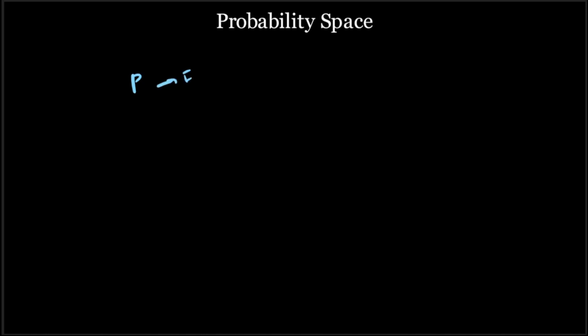The third characteristic is the probability measure. Basically, a probability measure is a measure using which you can define the probability of occurrence of all the events in the sigma algebra. For example, in the coin toss experiment, if the coin is a fair coin, the probability of heads is one-half and the probability of tails is one-half. And the probability of all those events can be measured using this probability measure.